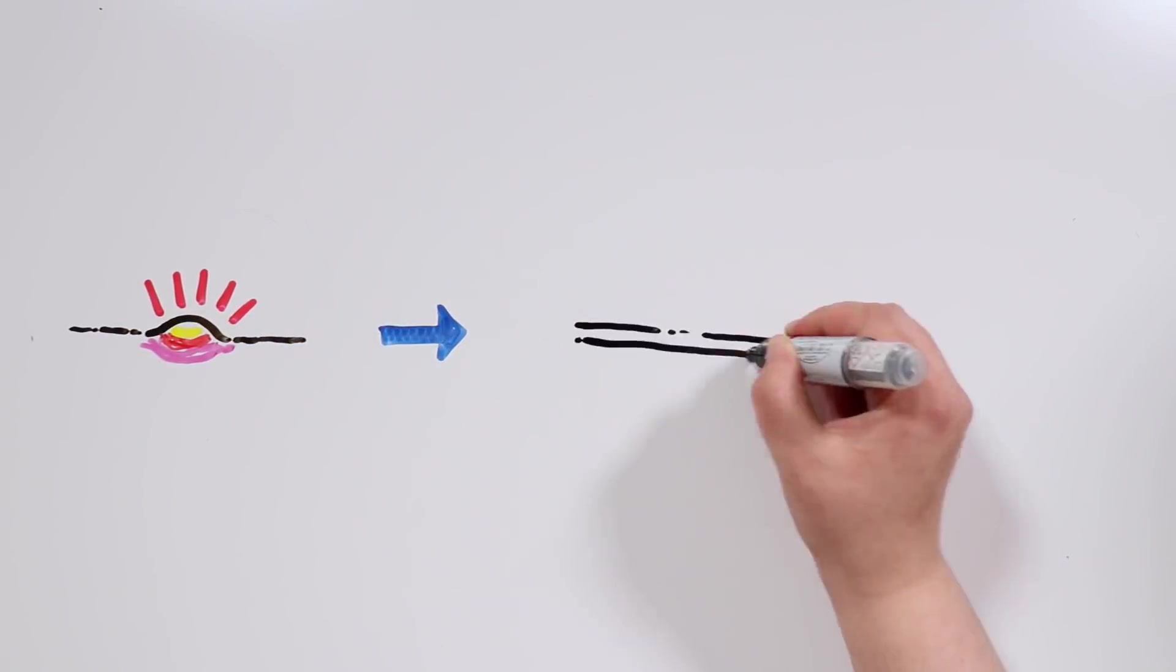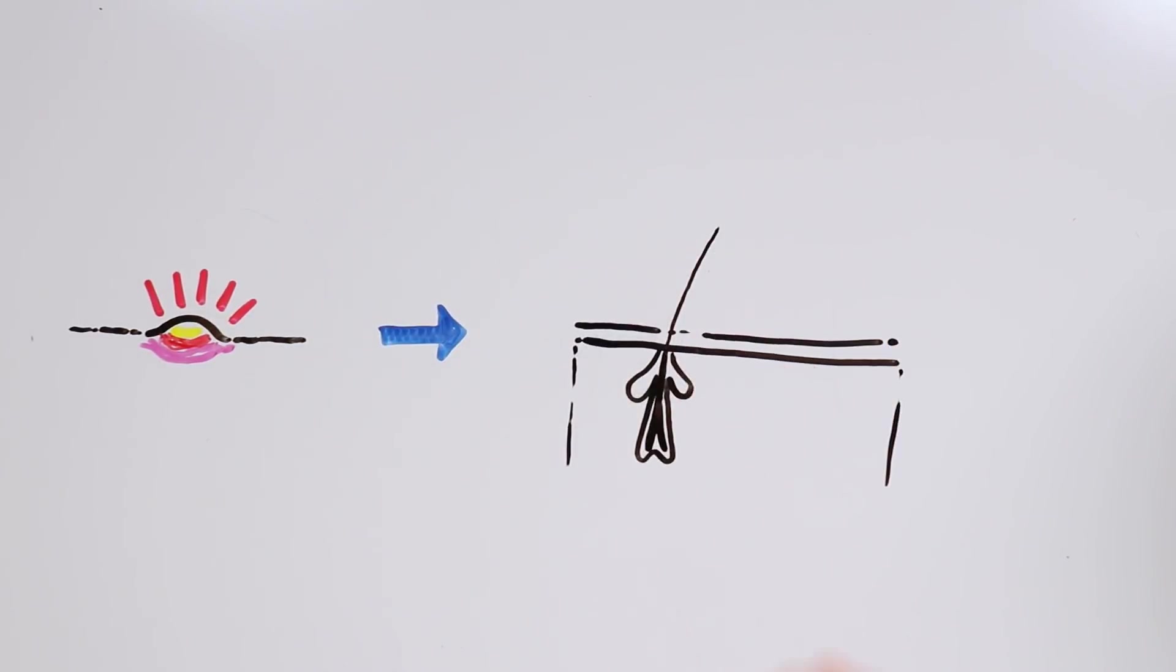A zit, or pimple, is a protrusion which can appear on some parts of the body. Sometimes they produce pus and appear when our pores get blocked. Each pore is an opening to a follicle, which contains one hair and a sebaceous gland.